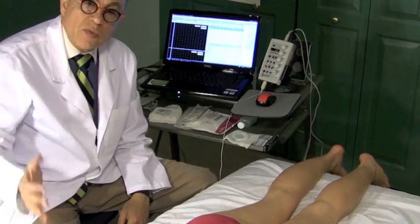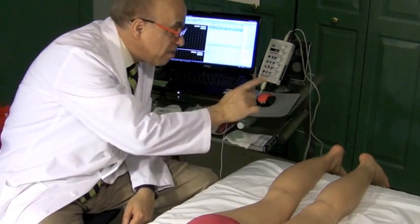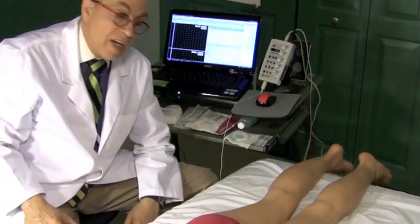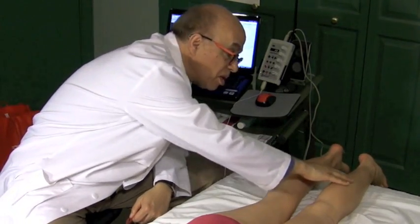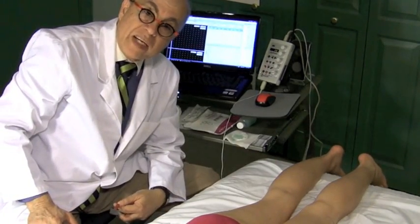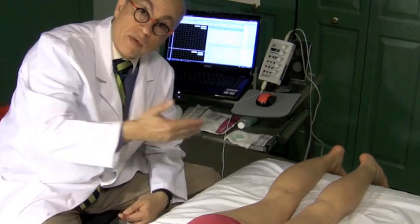When we do the H reflex, we have the subject laying on their belly, as you see, with their feet hanging over the bed. The reason for that is we want their calf muscles to be relaxed. In fact, that's where we record the H reflex from, from the calf muscles.